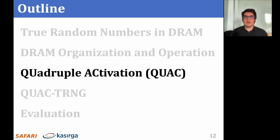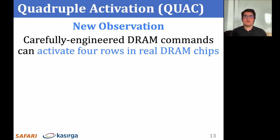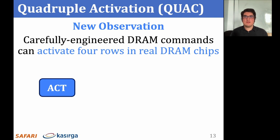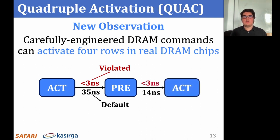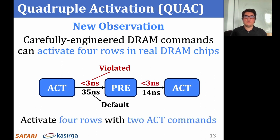Now I will introduce quadruple activation. We observed that a valid sequence of DRAM commands can activate four consecutive rows in quick succession in real DRAM chips. We call this new phenomenon quadruple activation, and we refer to it as QUAC. To perform a QUAC operation in a DRAM chip, we first send an activate command. Then we send a precharge command that greatly violates the TRAS timing parameter — instead of waiting for the default 35 nanoseconds, we wait for less than 3 nanoseconds. We follow this up with another activate command, this time violating the TRP timing parameter. In doing so, we are able to open four DRAM rows with just two activate commands.